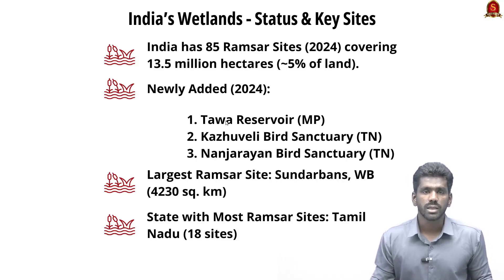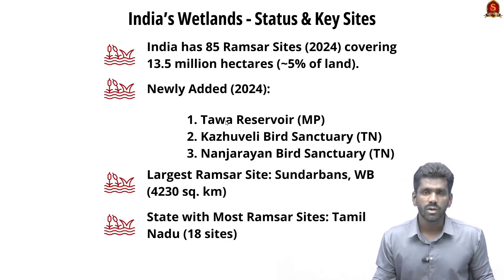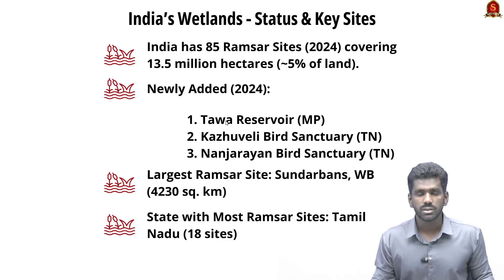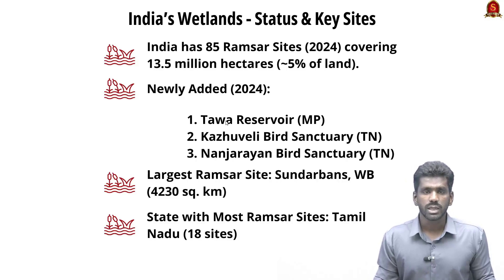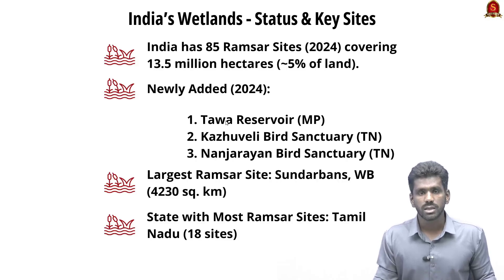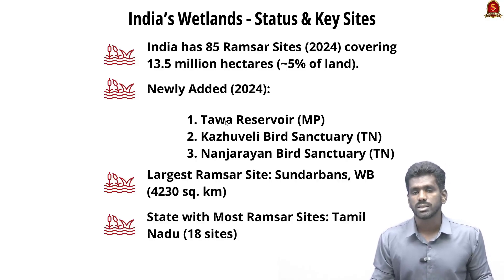India has 85 Ramsar sites — wetlands of international importance — covering over 13.5 million hectares. Newly added wetlands include the Tawa Reservoir of Madhya Pradesh, Kaluveli Bird Sanctuary in Tamil Nadu, and Nanjarayan Bird Sanctuary in Tamil Nadu. The largest Ramsar site in India is the Sundarbans wetland in West Bengal, and the smallest is Renuka wetland in Himachal Pradesh. Tamil Nadu has the most Ramsar sites with 18.